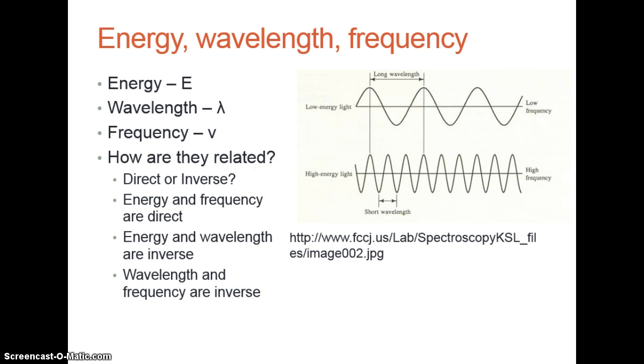So how are they all related to each other, direct or inverse? Direct means that if one goes up, the other goes up. Inverse means if one goes up, the other goes down. We have low-energy and low-frequency, so those are direct. Energy and wavelength, I have high energy, but I have small wavelengths, so they're inverse. Or I have small energy and large wavelengths, so that's inverse.